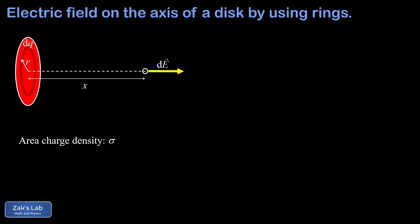Area charge density is the charge per unit area measured in coulombs per square meter, and we usually give that the symbol sigma. The area charge density for this disk is Q divided by πR², the total charge divided by the total area. We can also turn this around: the total charge is sigma times πR². We're going to use this idea more than once — if you want the total charge, take the area charge density and multiply it by the area.